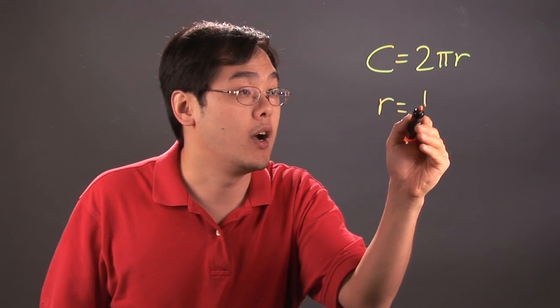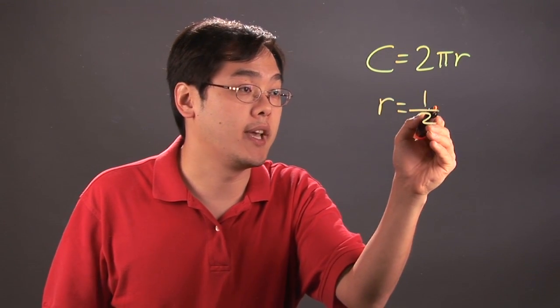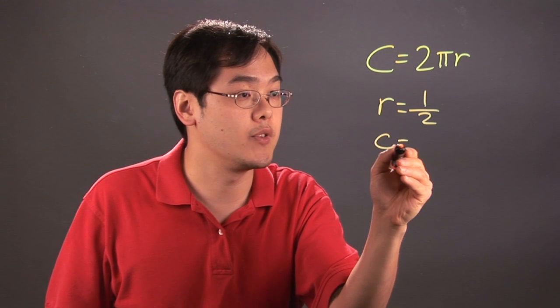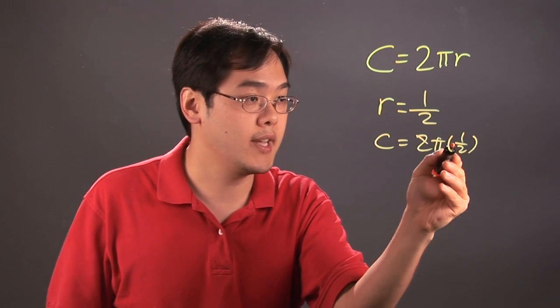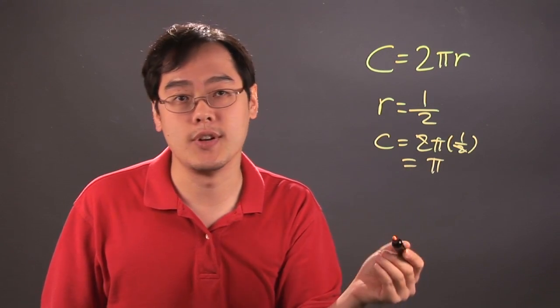So if your radius was, let's just say, 1 half, then you just plug in the 1 half where the r is, so the circumference would be 2 pi times 1 half. The 2's would cancel, and so you're left with just pi as your circumference.